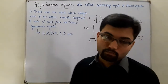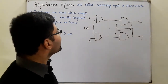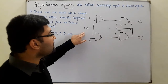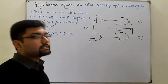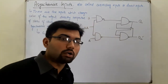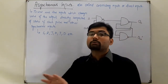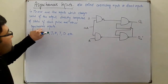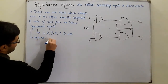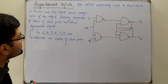The definition: these are the inputs when applied that change the output directly without depending on the status of the clock pulse. Now, the synchronous inputs S and R also change the output values, but they cannot change it directly — they depend on the status of the clock pulse. For the JK flip-flop, when the clock is high and both inputs are one, the output toggles. But if the clock pulse is low and both inputs are high, the output will not toggle. So synchronous inputs depend on the status of the clock pulse.